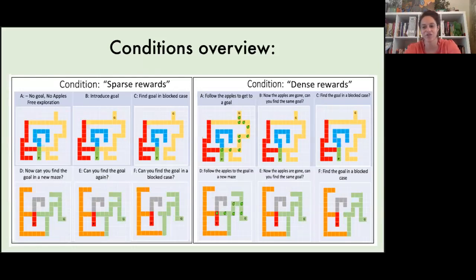Then we do the same tasks but in a novel maze design for a total of six mazes per child. In the dense rewards condition, for part one children are told to follow a path of apples that will lead them to the goal. Then in part two we take these apples away and ask them to get to the goal. And in part three we block the main path to the goal. Then we do the same tasks but in a novel maze design. We then train and compare the agents in these exact same maze situations.